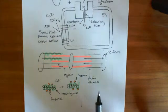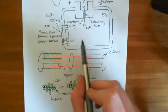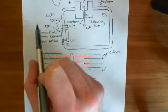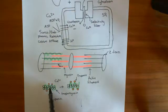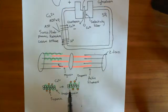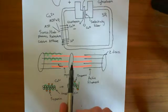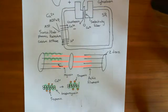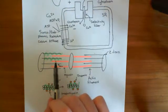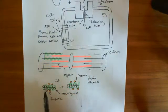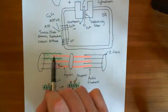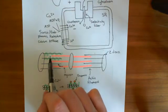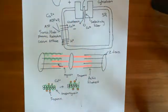Looking at the bigger picture: the SERCA pump takes calcium levels in the cytoplasm down. If calcium goes down in the cytoplasm, calcium will cleave off from troponin C. If calcium cleaves off from troponin C, tropomyosin returns to its original conformation and blocks the actin monomer myosin binding sites. The myosin filament can no longer climb up the actin filament, blocking crossbridge formation. When all crossbridges have cleaved, elastic recoil will re-extend the sarcomeres, leading to relaxation of the muscle.